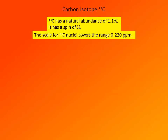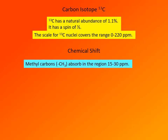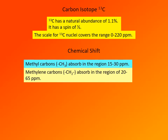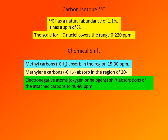The carbon-13 NMR scale covers the range between 0 and 220 ppm — a much larger scale compared to proton NMR. When we consider chemical shifts of typical carbons, methyl carbons (CH3 groups) absorb at 15 to about 30 ppm. Methylene carbons absorb in the region of between 20 and 65 ppm. Electronegative atoms attached to carbon shift absorption of such carbon to the region of between 40 and 80 ppm.